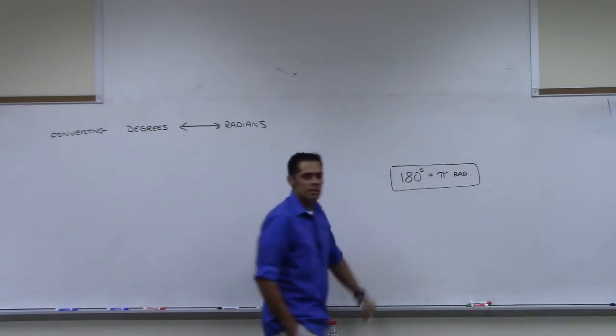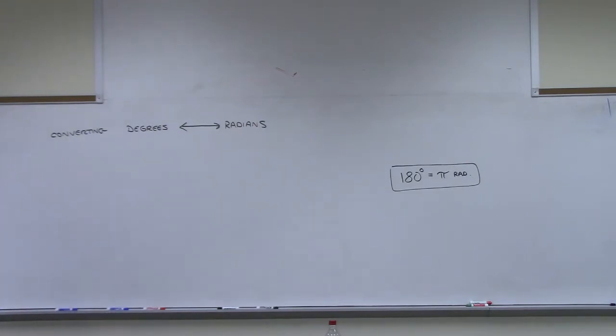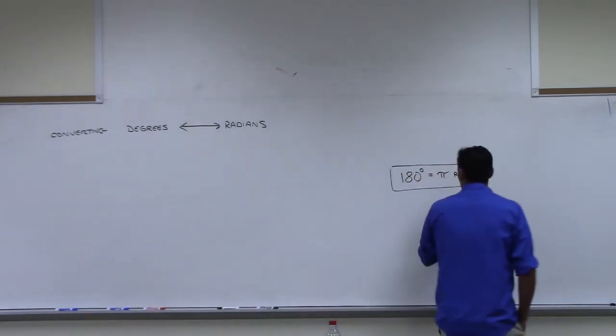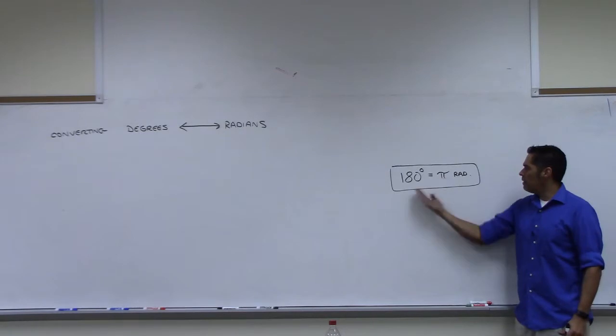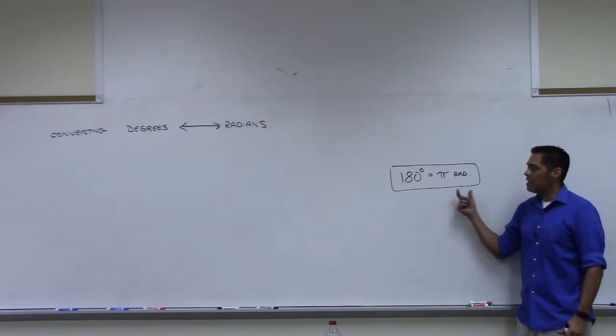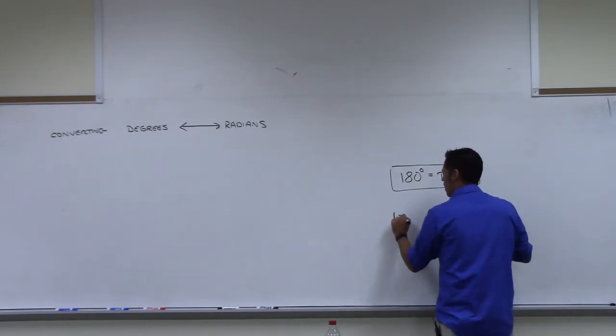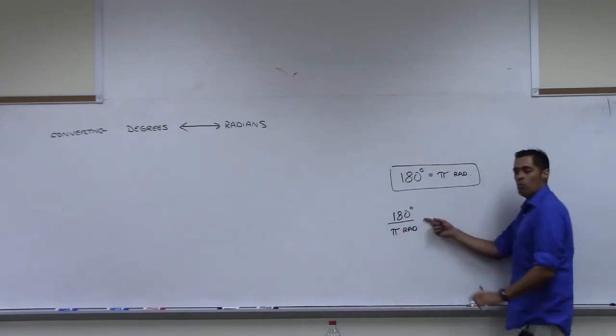All I'm going to use for this is the following property: that 180 degrees equals pi radians. That's what I'm going to use right there. If we all agree that this is true. By the way, I didn't prove that to you, did I? I just told you to believe that. Okay, so we have to take that on faith. This equation, I can write this two different ways. Do you agree I can divide both sides by pi radians? If I divide both sides by pi radians, then the left side will be 180 over pi, and the right side will be 1.